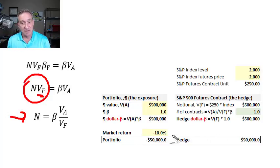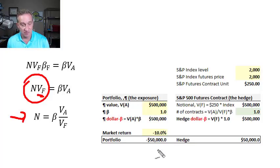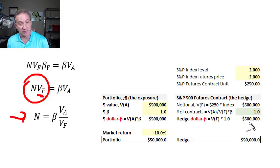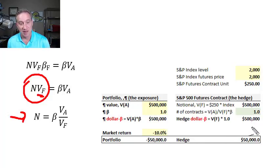To illustrate: if the market return went down 10%, my portfolio with a beta of 1.0 would lose $50,000. But my beta-neutralizing hedge would have been short one contract, and under our assumptions, that short futures contract would have produced a gain of $50,000 because it also has a beta of 1 — exactly offsetting. That gain is just 10% times the notional value of the futures contract.